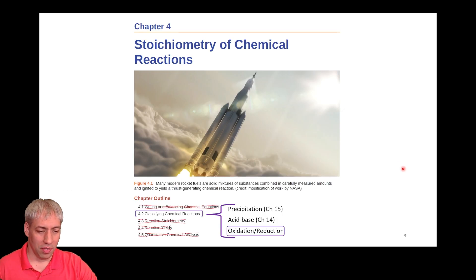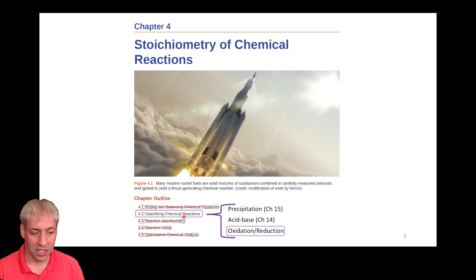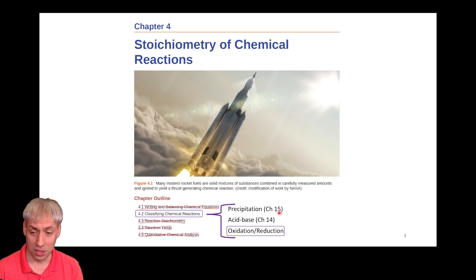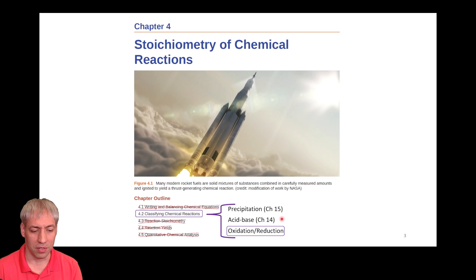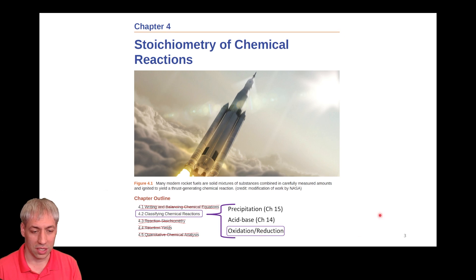This is a bit of a review of previous content. Chapter 4 has an unusual section called Classifying Chemical Reactions, covering precipitation and acid-base chemistry. Precipitation we dove much deeper into in Chapter 15, acid-base in Chapter 14, and oxidation and reduction is what we're going to dive into in Chapter 17, coupling those reactions to generate galvanic cells.